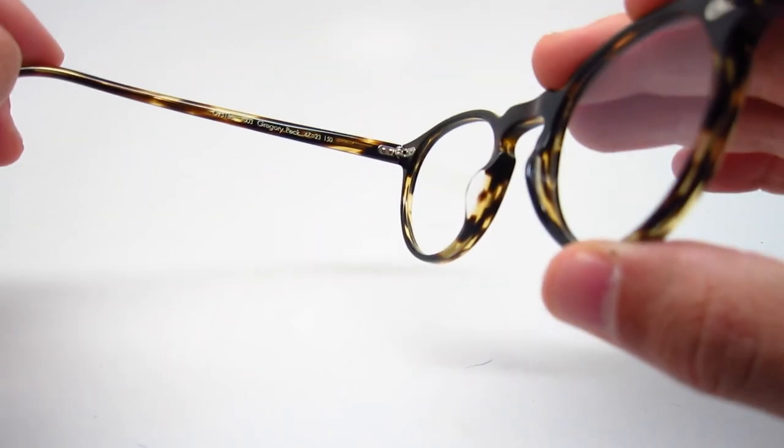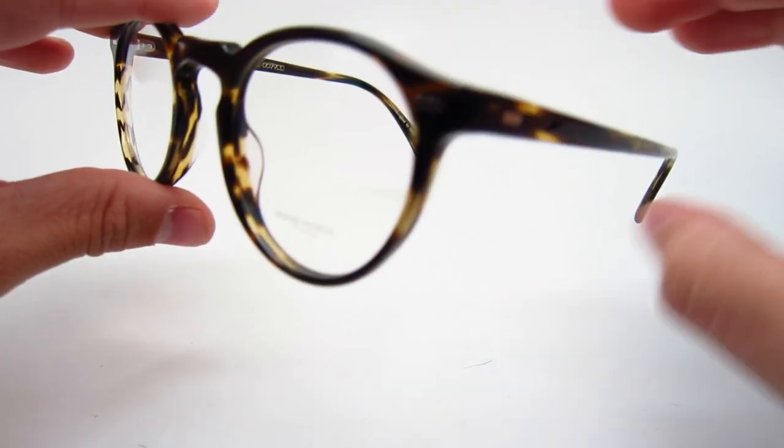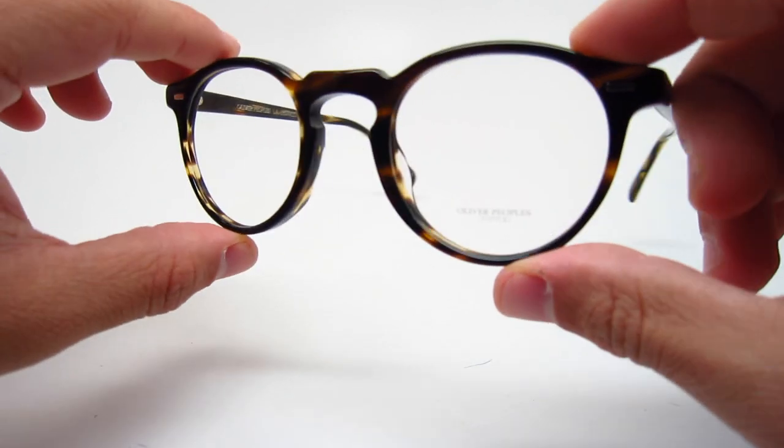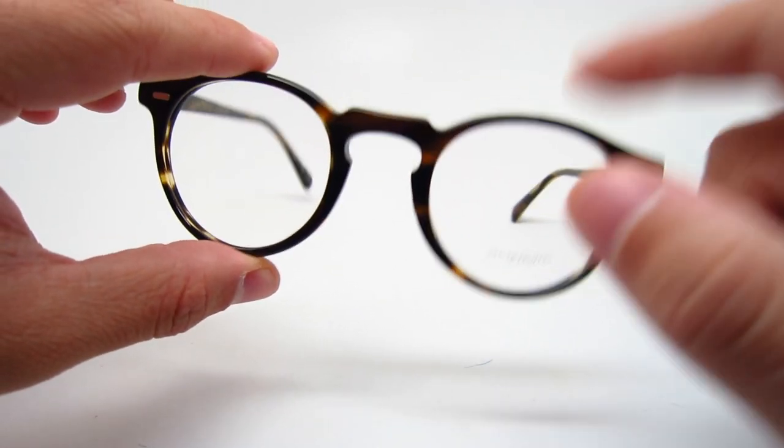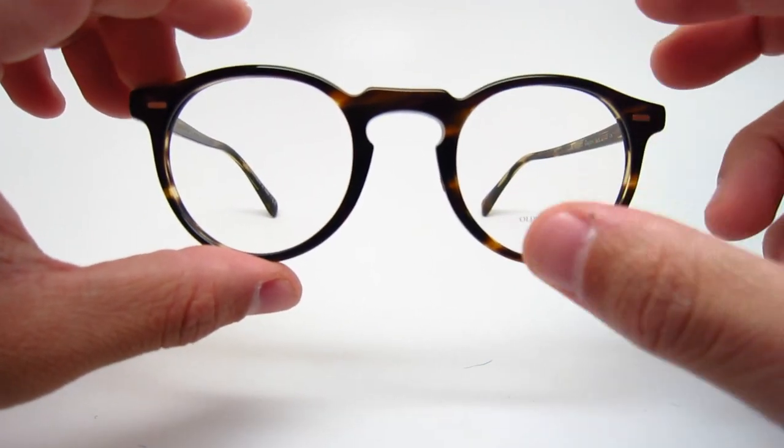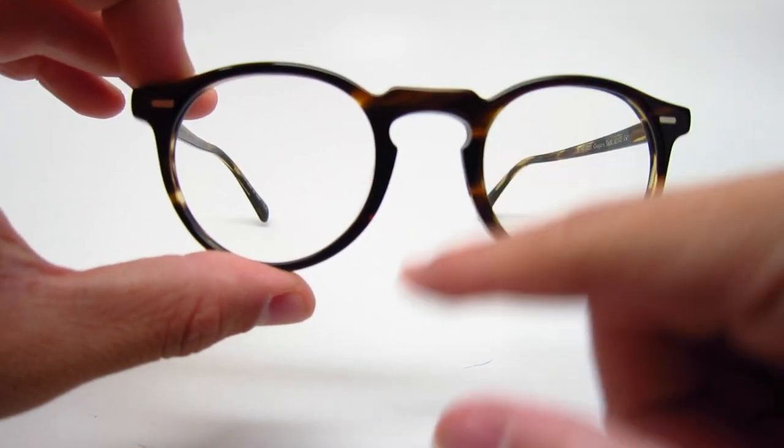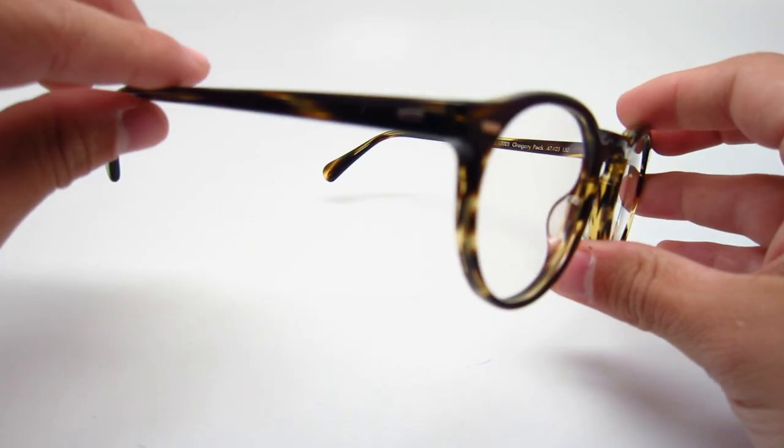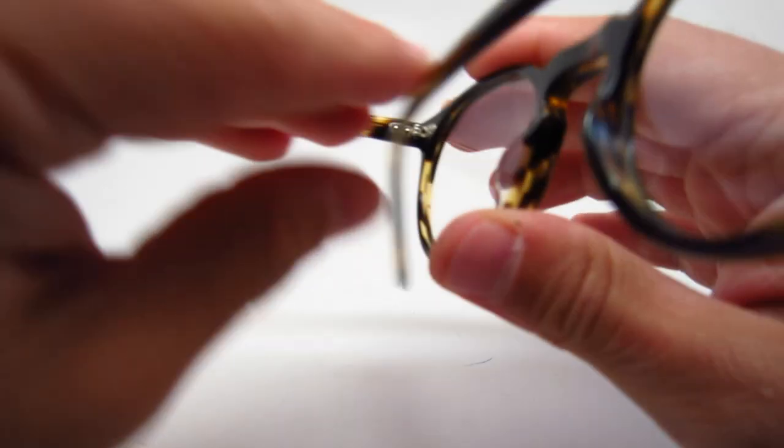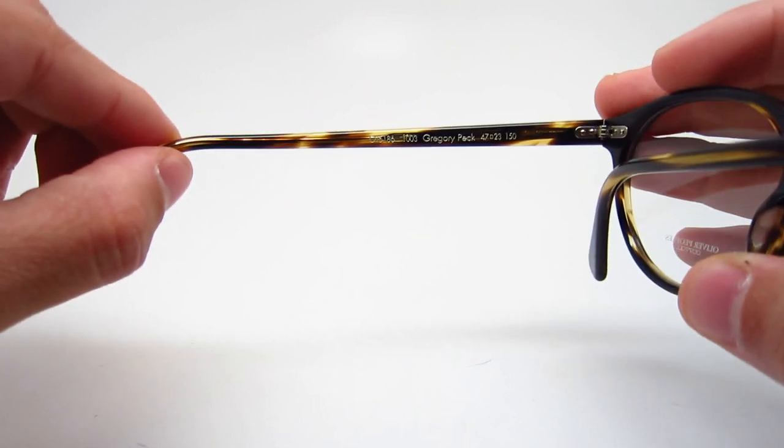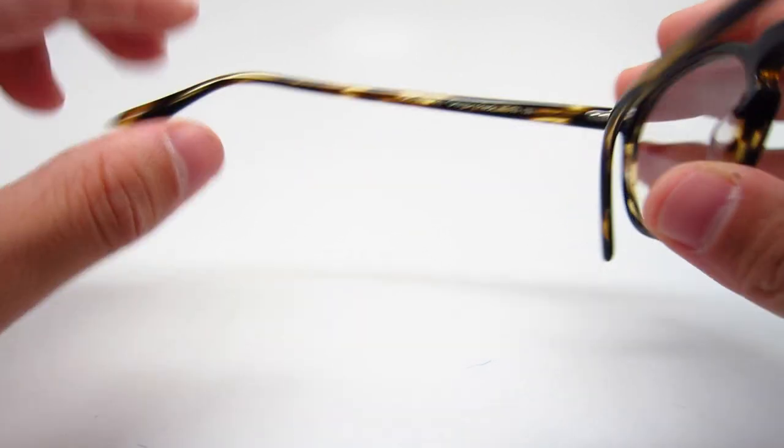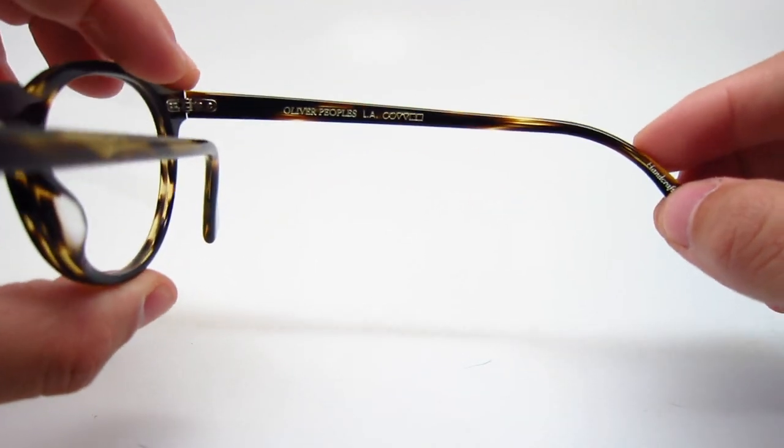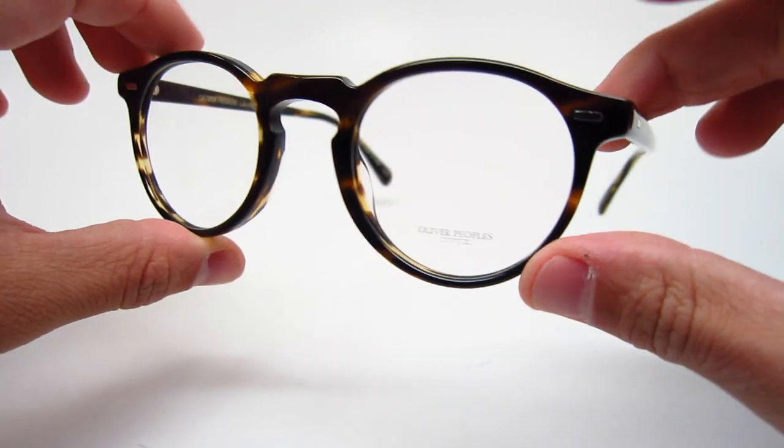So yeah, you can't really go wrong with these. Very popular frames. Have been around for many many years. Just so you know, with the Cocobolo, each one will be unique. Like this one has a lot more darker spots. Sometimes you see way more lighter spots. But you can't really control what you're gonna get, especially if you buy it online. If you go in store, obviously you can see it in person.